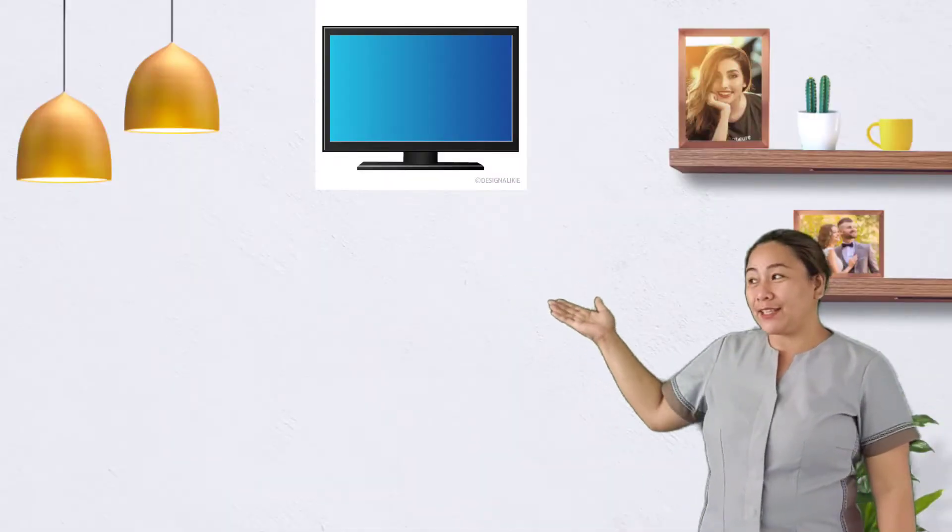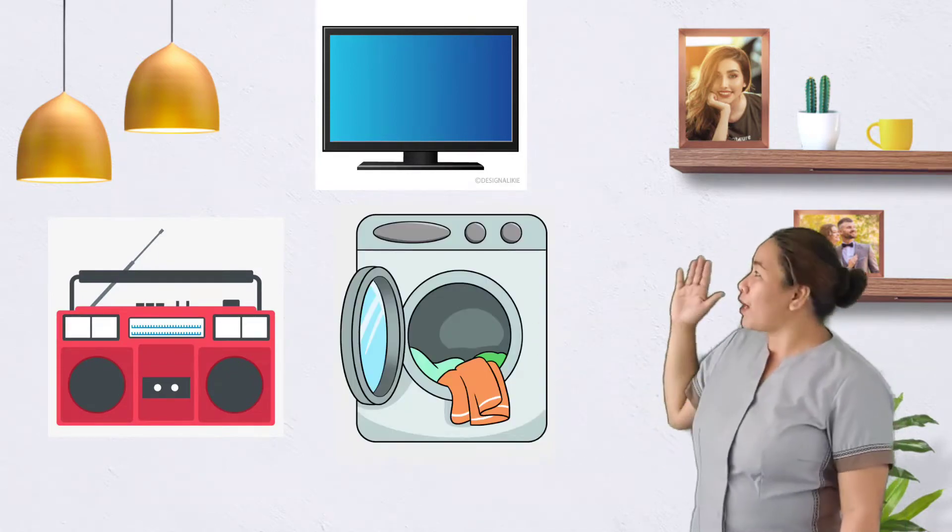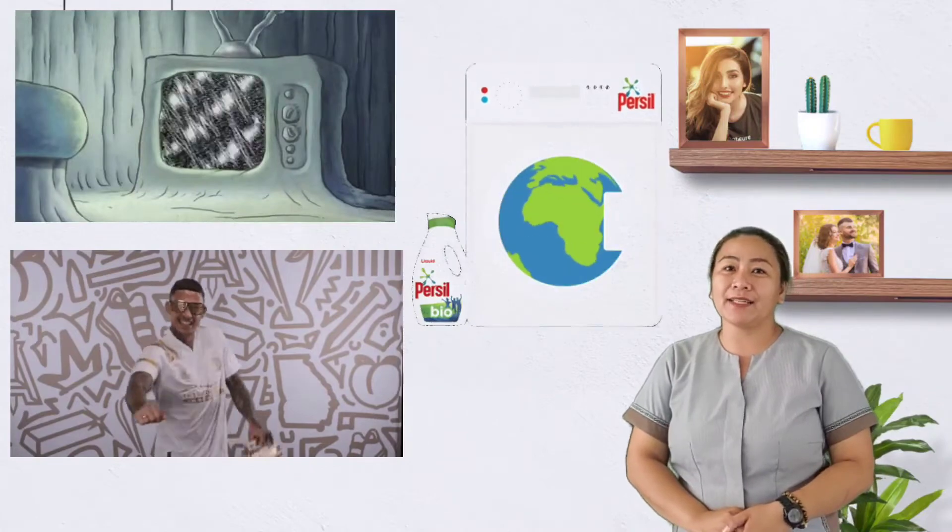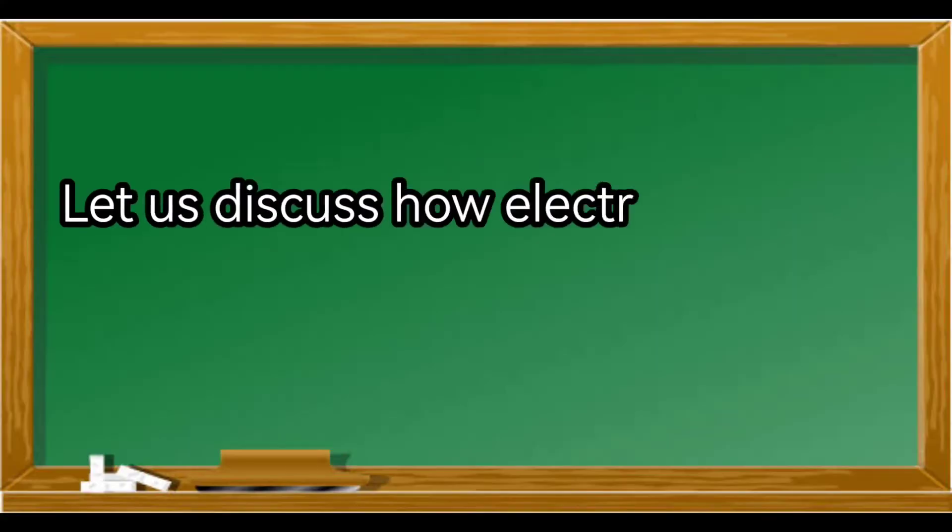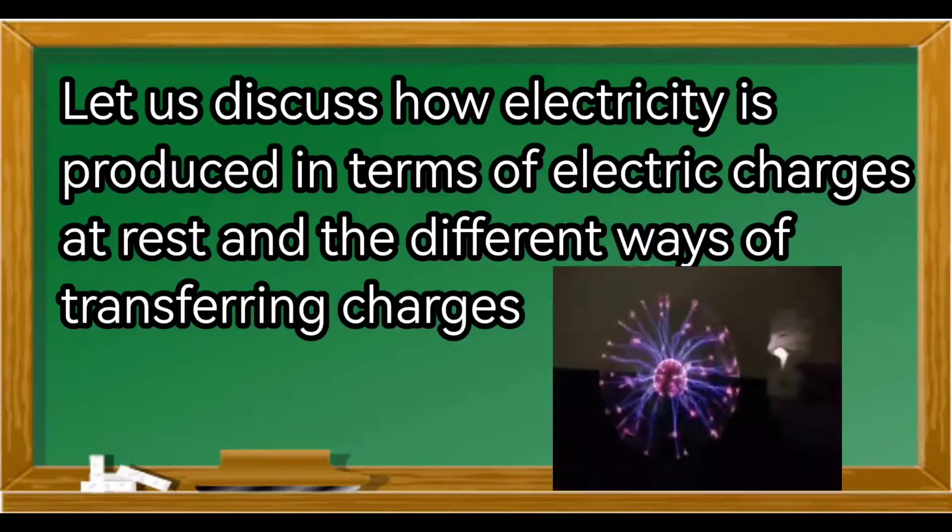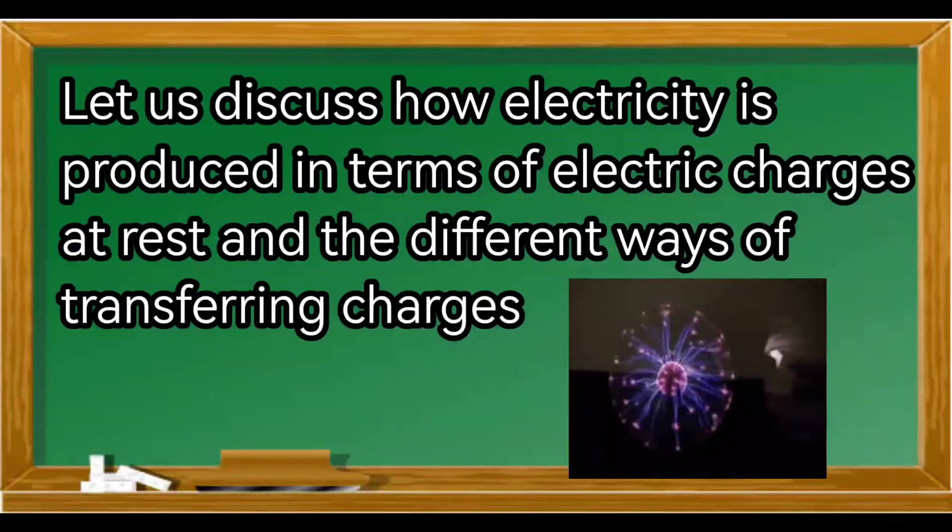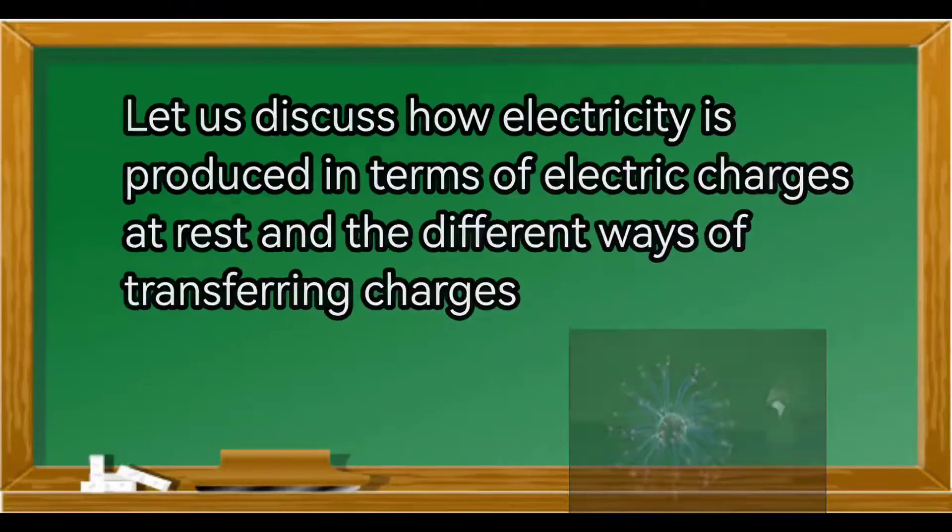Appliances at home like TV, radio, and washing machine are powered by electricity. It makes our daily activities easier. Let us discuss how electricity is produced in terms of electric charges at rest and different ways of transferring charges.